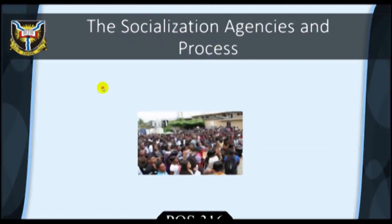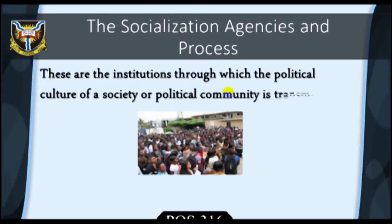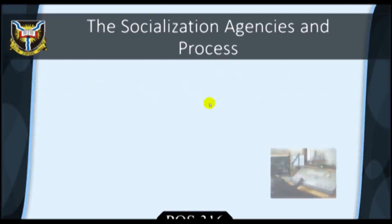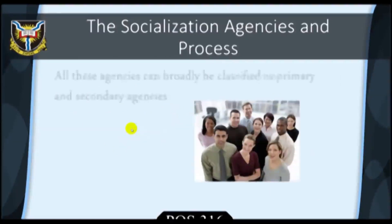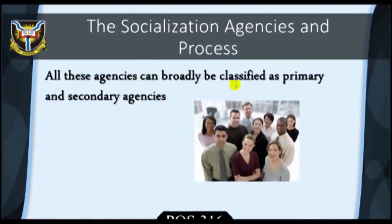Socialization agencies and process. The agencies of Political Socialization are the institutions through which the political culture of a society or political community is transmitted. The most prominent of these include the family, schools and other educational institutions or learning centers, voluntary and peer groups, mass media, and governmental agencies. For ease of reference, all these agencies can broadly be classified as primary and secondary agencies.